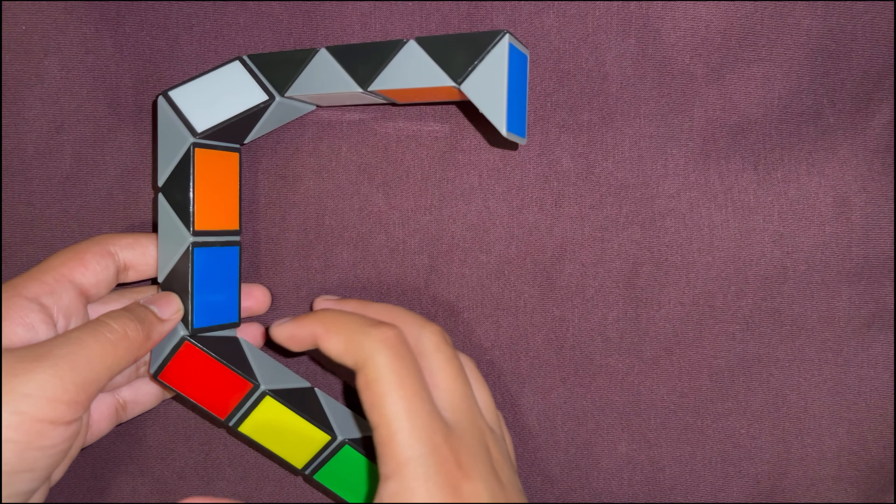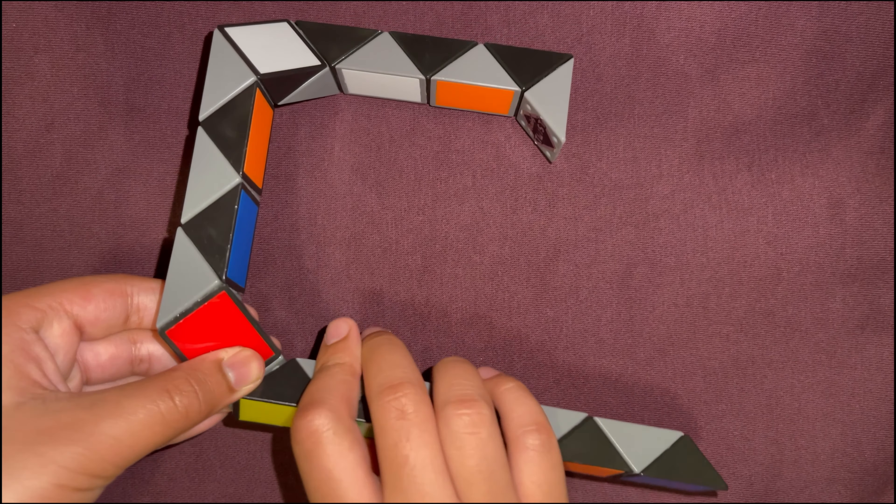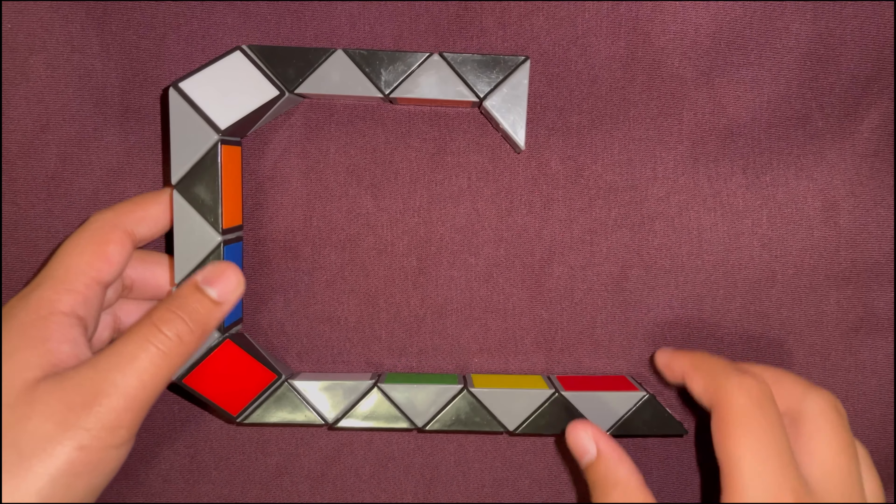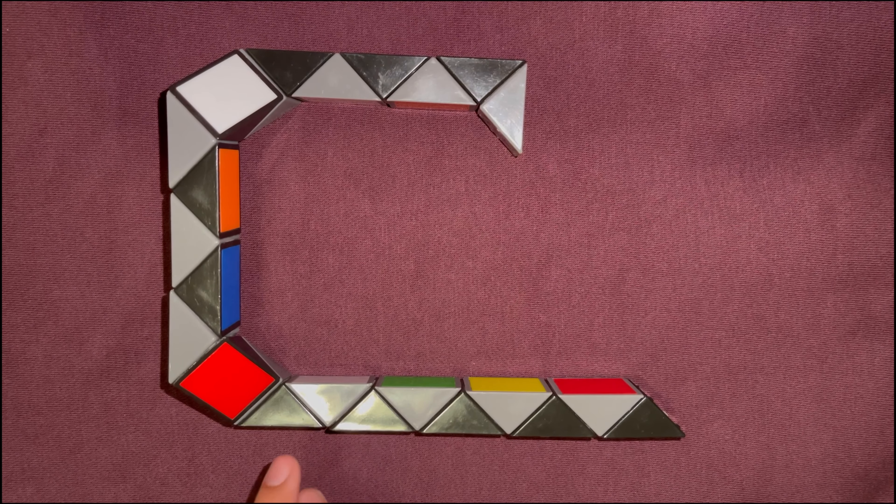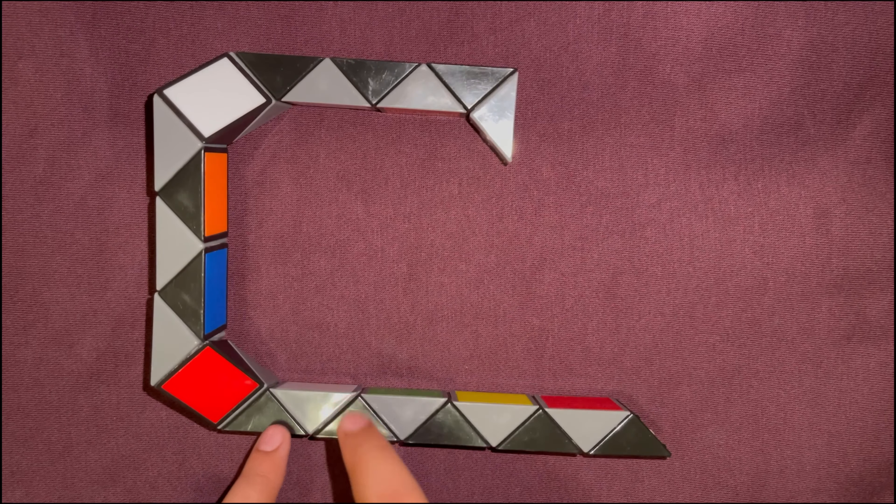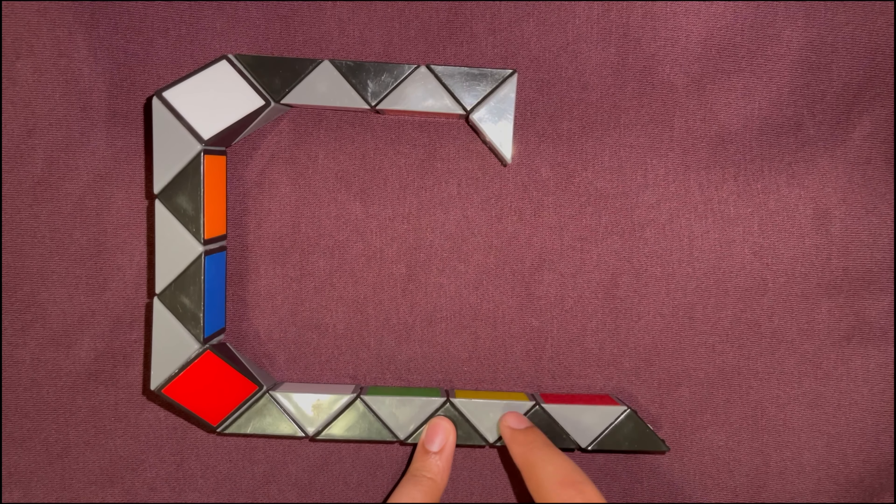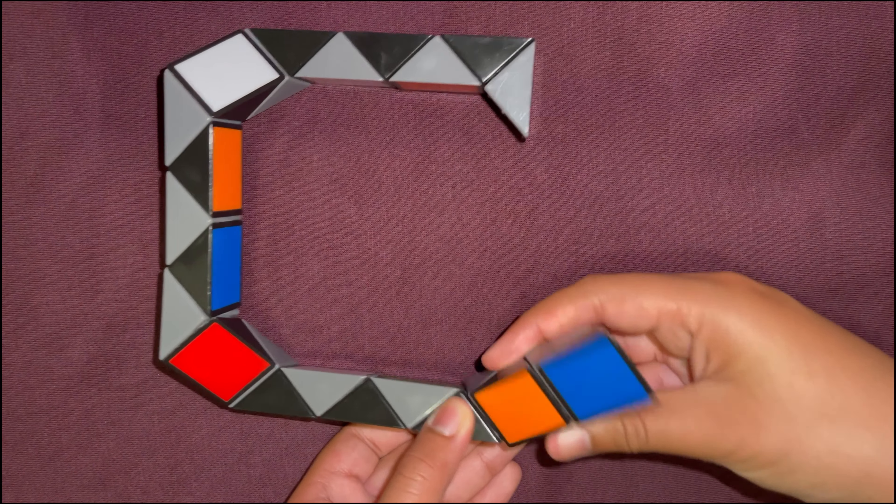Now you're going to count one, two, and turn this third block to the right like this. Now you're going to count another five—one, two, three, four, five—and turn the sixth block two times.